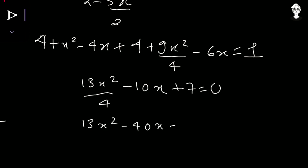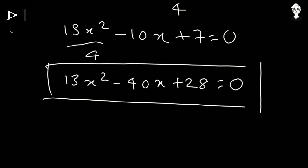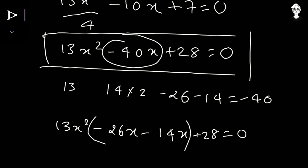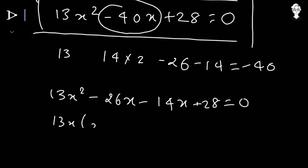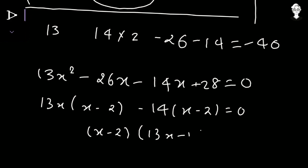Multiplying through by 4 gives 13x squared minus 40x plus 28 equals 0. To factor the quadratic, we need 40 as a split of 13 times 28: 13 times 2 gives 26 and 14 gives 14, and negative 26 minus 14 gives negative 40. So we write 13x squared minus 26x minus 14x plus 28 equals 0, then factor as 13x(x minus 2) minus 14(x minus 2) equals 0, giving (x minus 2)(13x minus 14) equals 0.